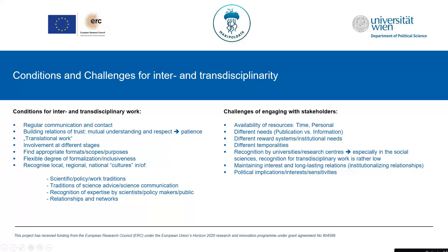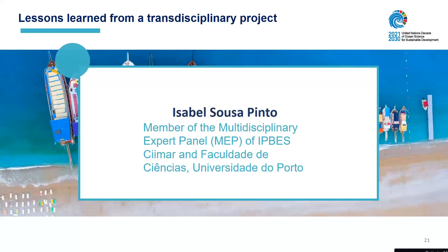Challenges include the availability of resources — time and personnel to maintain regular communication and build trust. There are also competing reward systems: academics need to publish in high-ranked journals, but also want to quickly inform those who need their results. Being involved in IPBES, for example, may not be as rewarding for a social science scholar as a scientific publication. Maintaining long-lasting relations and increasing institutional incentives for transdisciplinary work to be recognized are important points.